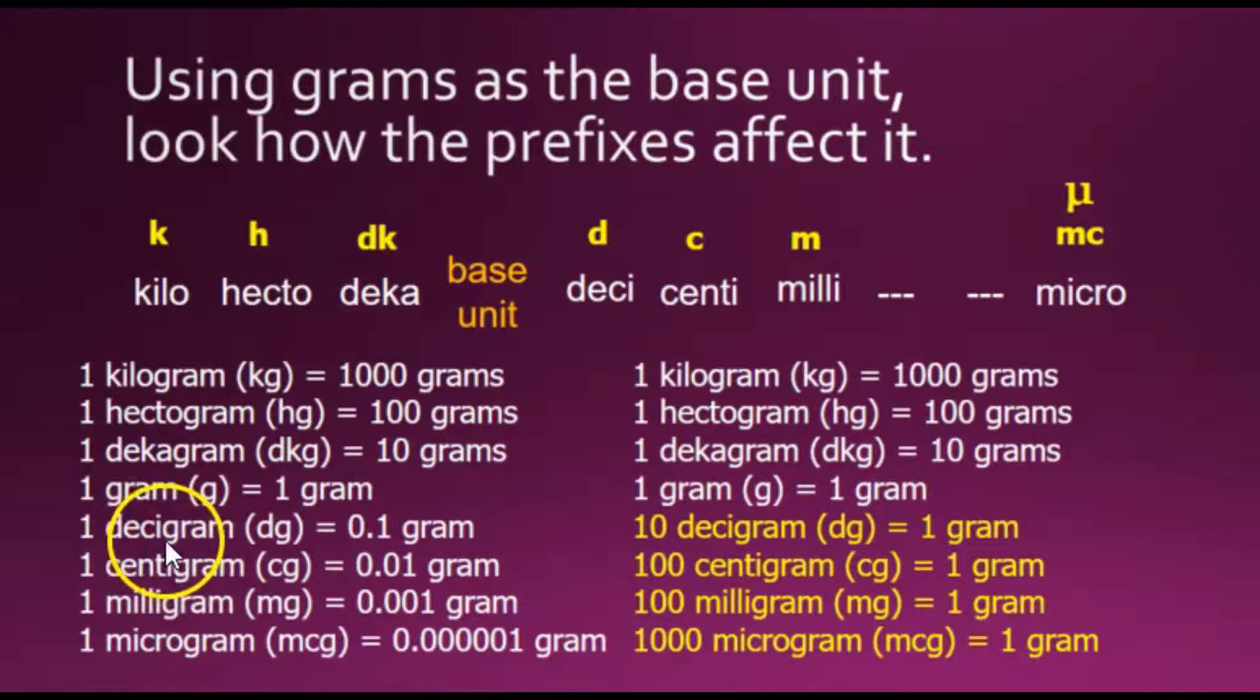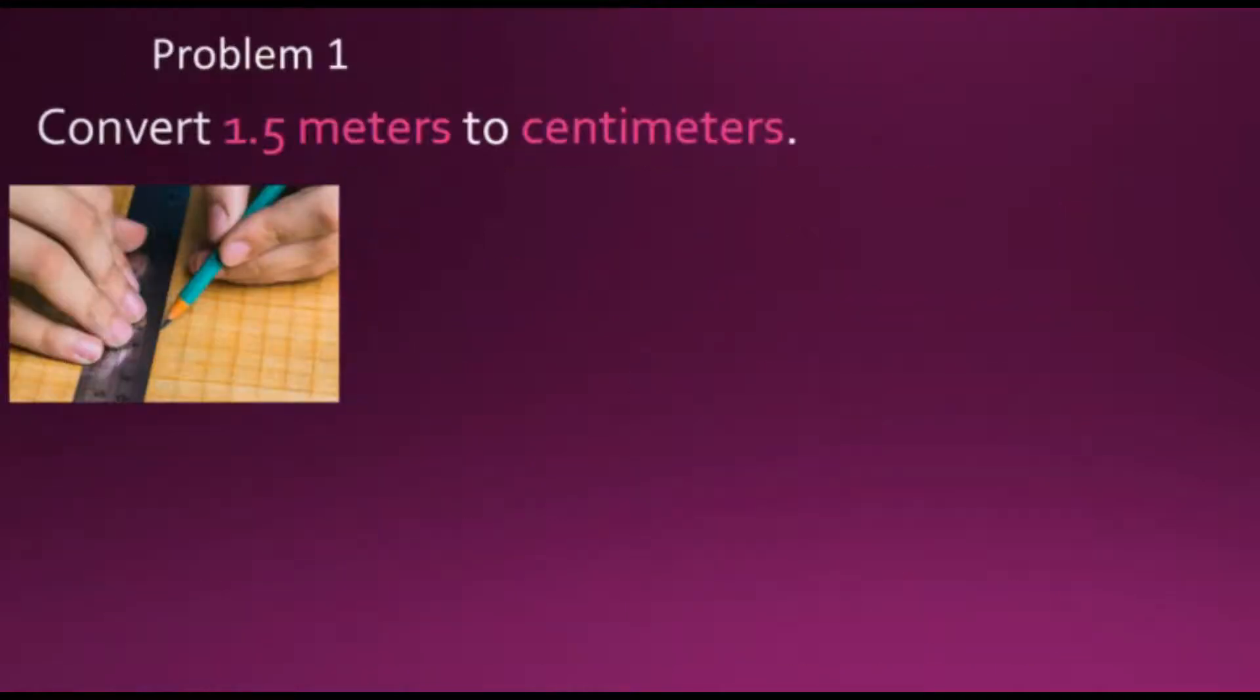These relationships can be converted with the base having a 1 shown here in yellow. Instead of 1 decigram equal to a tenth of a gram, multiplying both by 10, it now converts this into 1 gram is 10 decigrams, 1 gram is 100 centigrams, which came from multiplying both by 100.